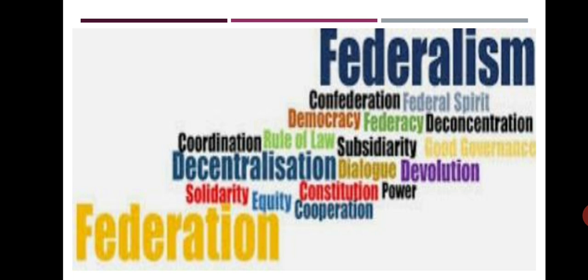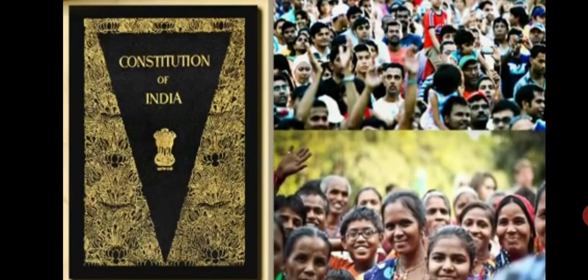One of the important features of a constitution is the federal system. In countries with large territories and huge populations, government is run by a federal system like that of India. Ruling a large territory from a single capital city is not only difficult, but may also lead to the neglect of some far-flung areas. For the convenience of the people residing there, government functions at two levels in a federation.